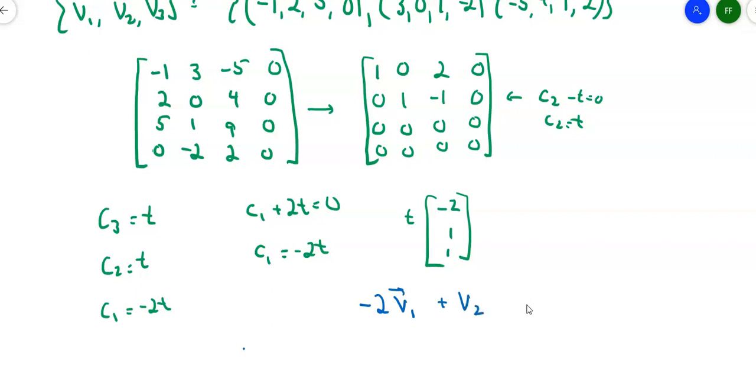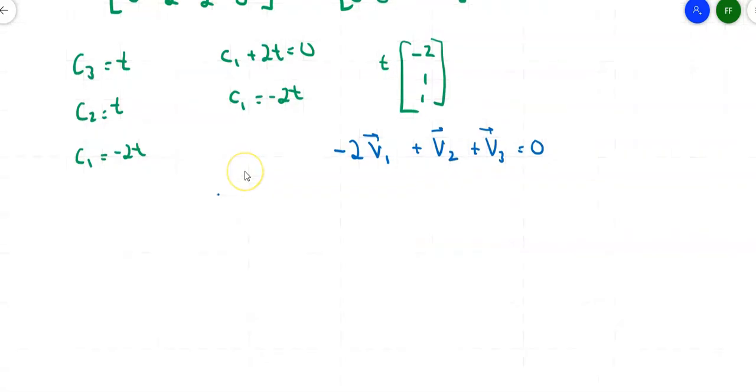Which means I can write -2 times the first vector plus the second vector plus the third vector is equal to 0. Meaning that if I take the V1 and V2 and move it over to the other side, I get V3 equals 2V1 minus V2. Another way of stating this is that vector 3 is actually a linear combination of vector 1 and vector 2. Now remember when we set up this span, we don't want to include vectors that are linear combinations of each other.